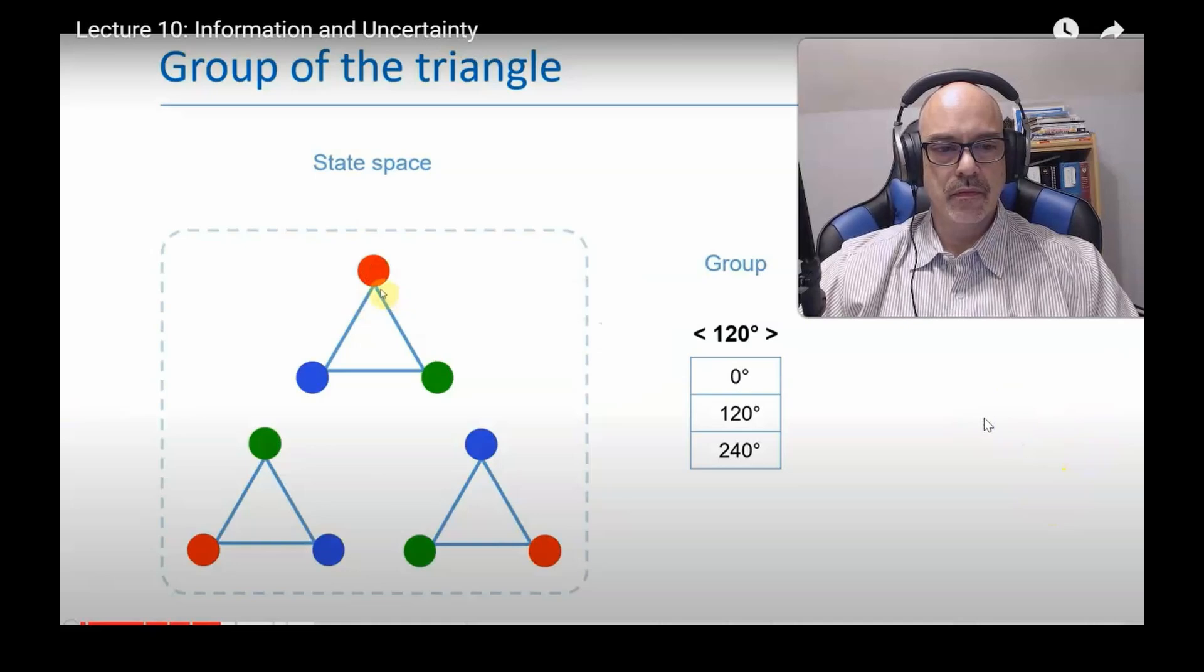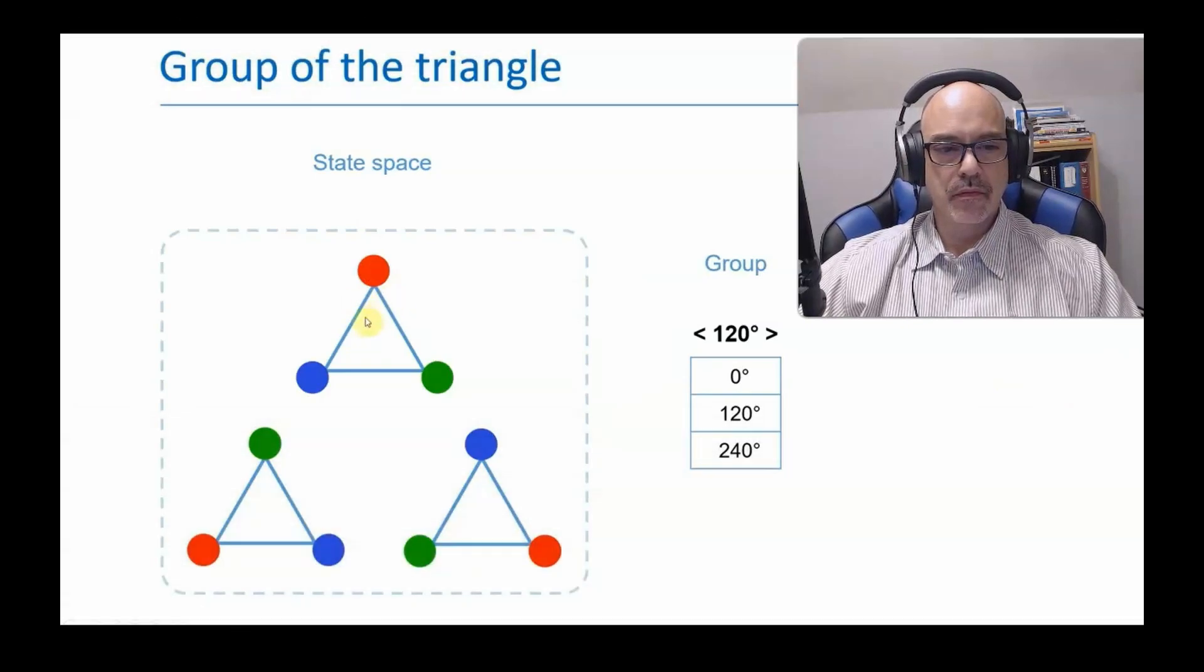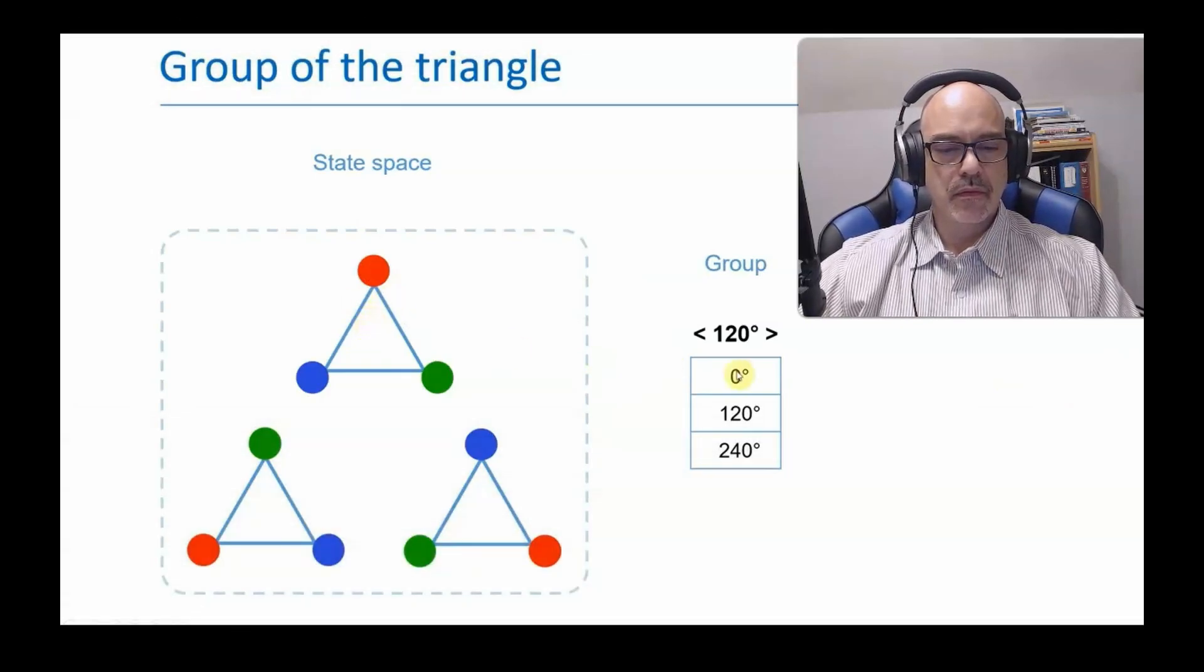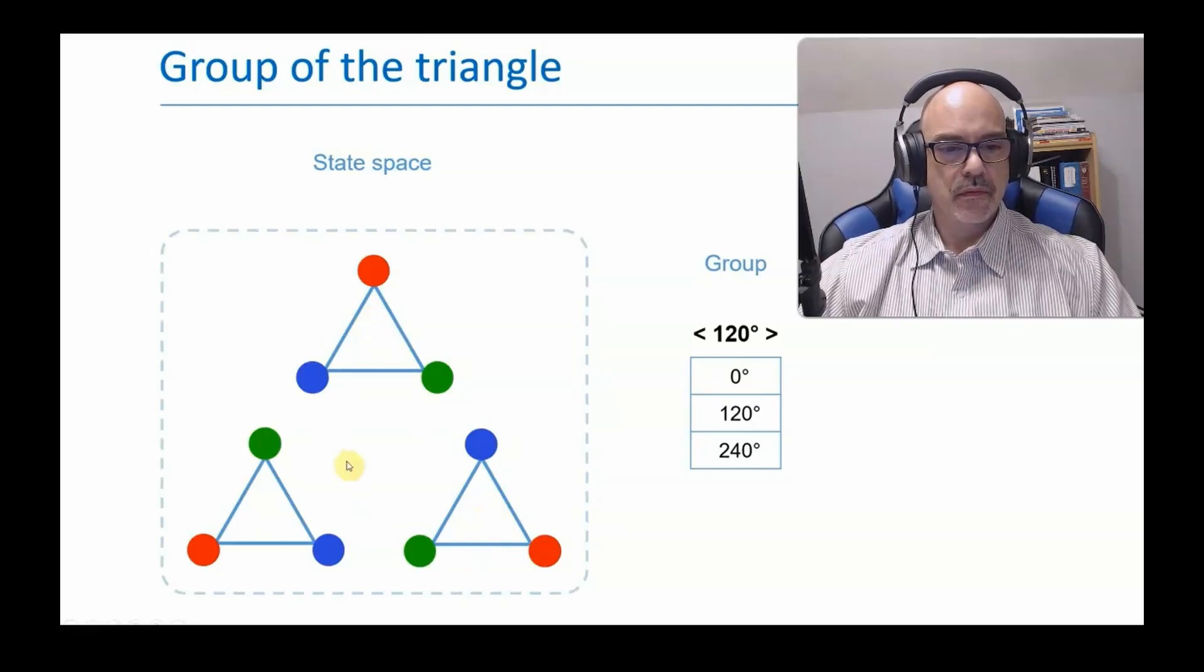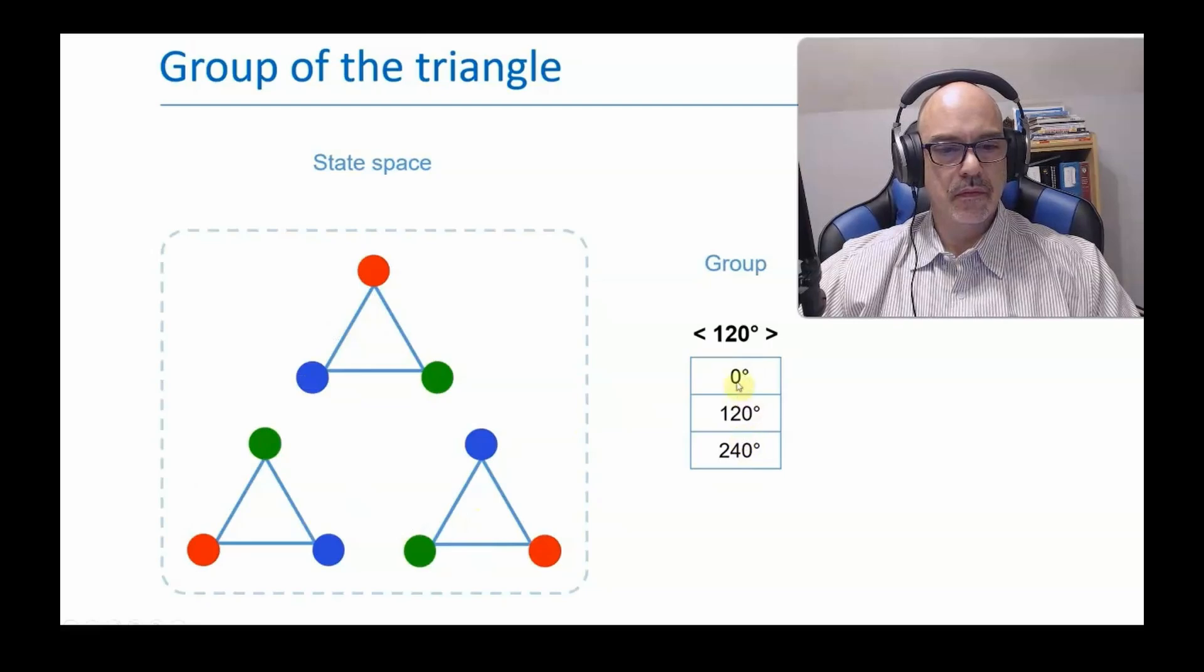Also, we took red-up as the starting state so that red-up corresponds to the identity. But it's not essential to start with red-up. If we take red-right as the starting state instead, it means that the states now correspond differently to the group elements, but the group is the same in either case.